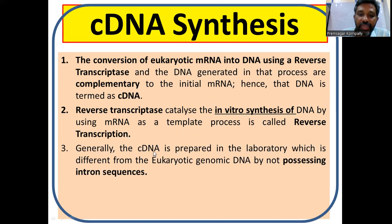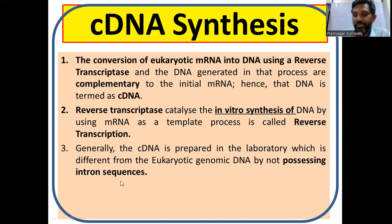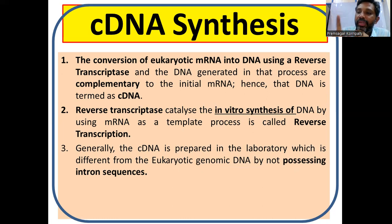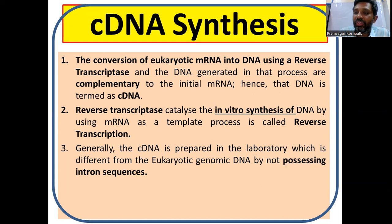Generally, cDNA is prepared in the laboratory and it is different from eukaryotic genomic DNA by not possessing intron sequences. Eukaryotic genomic DNA has both introns and exons, but cDNA has only exon sequences, not the intron sequences.